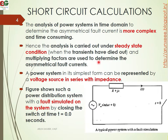A power system in its simplest form can be represented by a voltage source in series with an impedance. The voltage source is V sin(ωt + θ) with impedance Z equal to R plus jX. This figure shows a power distribution system with a fault simulated by closing a switch at t equal to zero seconds.